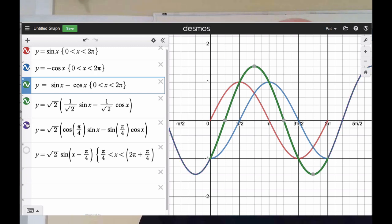Let's go to this one. Same graph. Go down to this one. Same graph. But now what I've done is I've restricted the domain to pi over four less than x less than two pi plus pi over four.